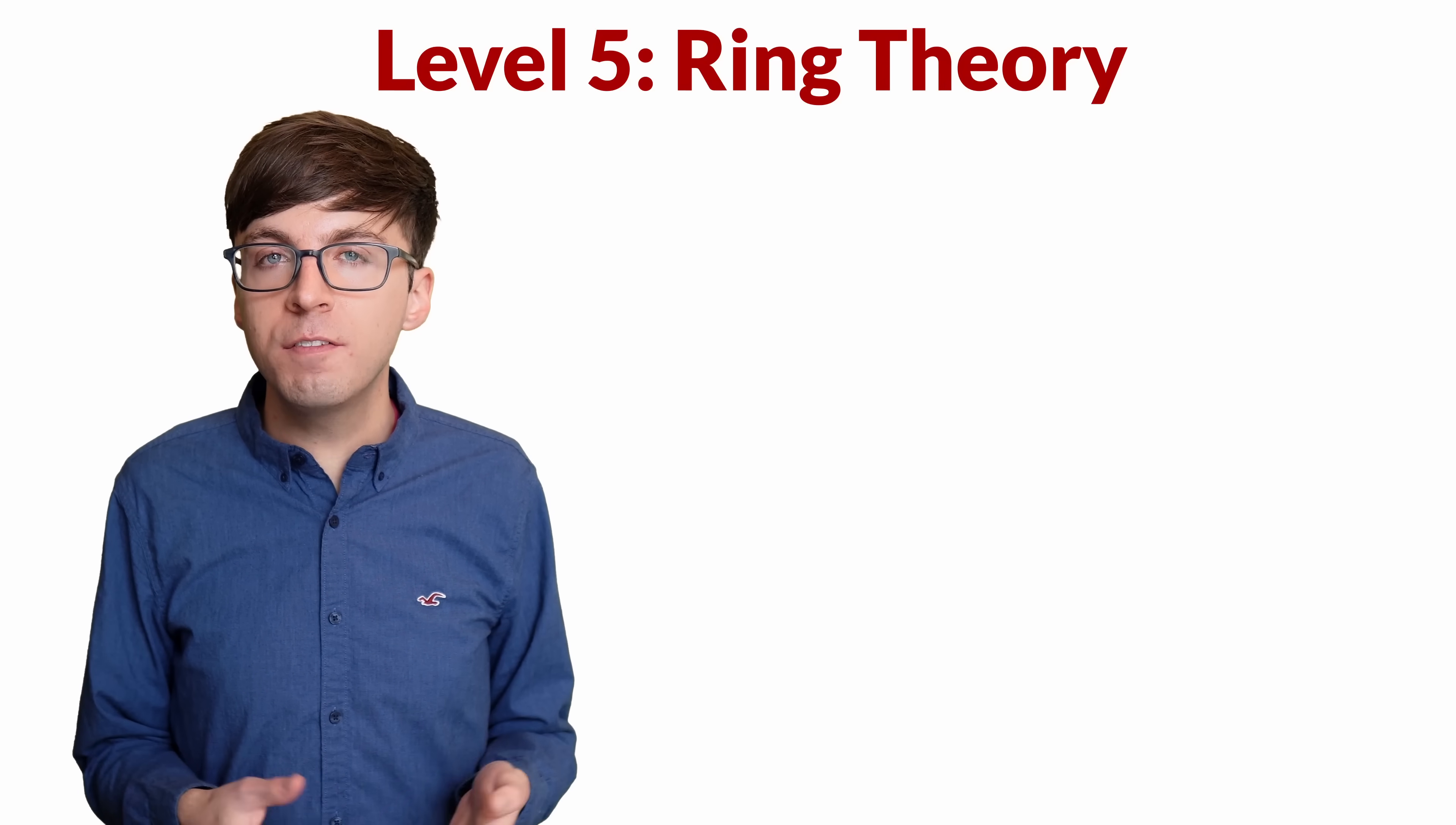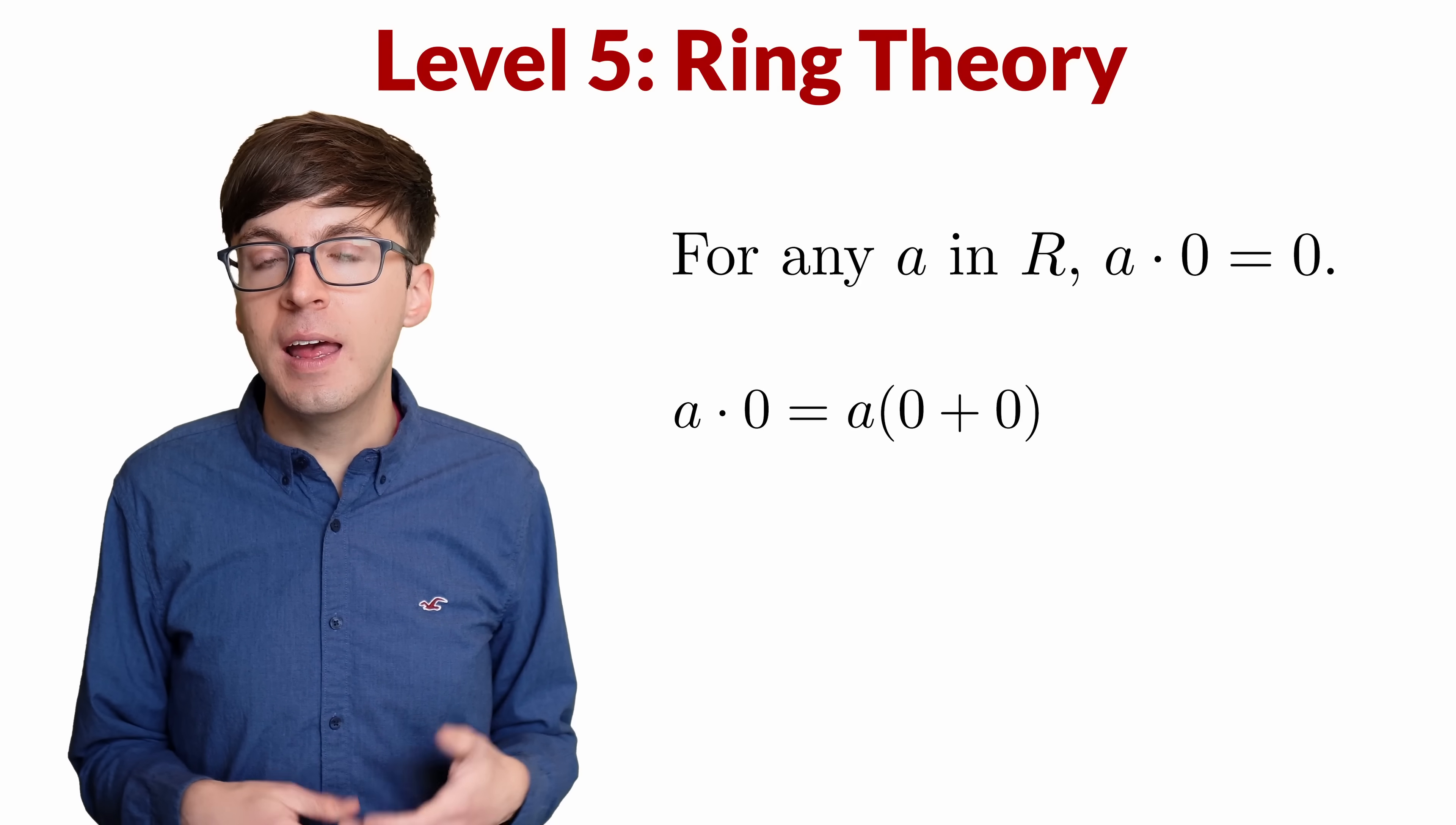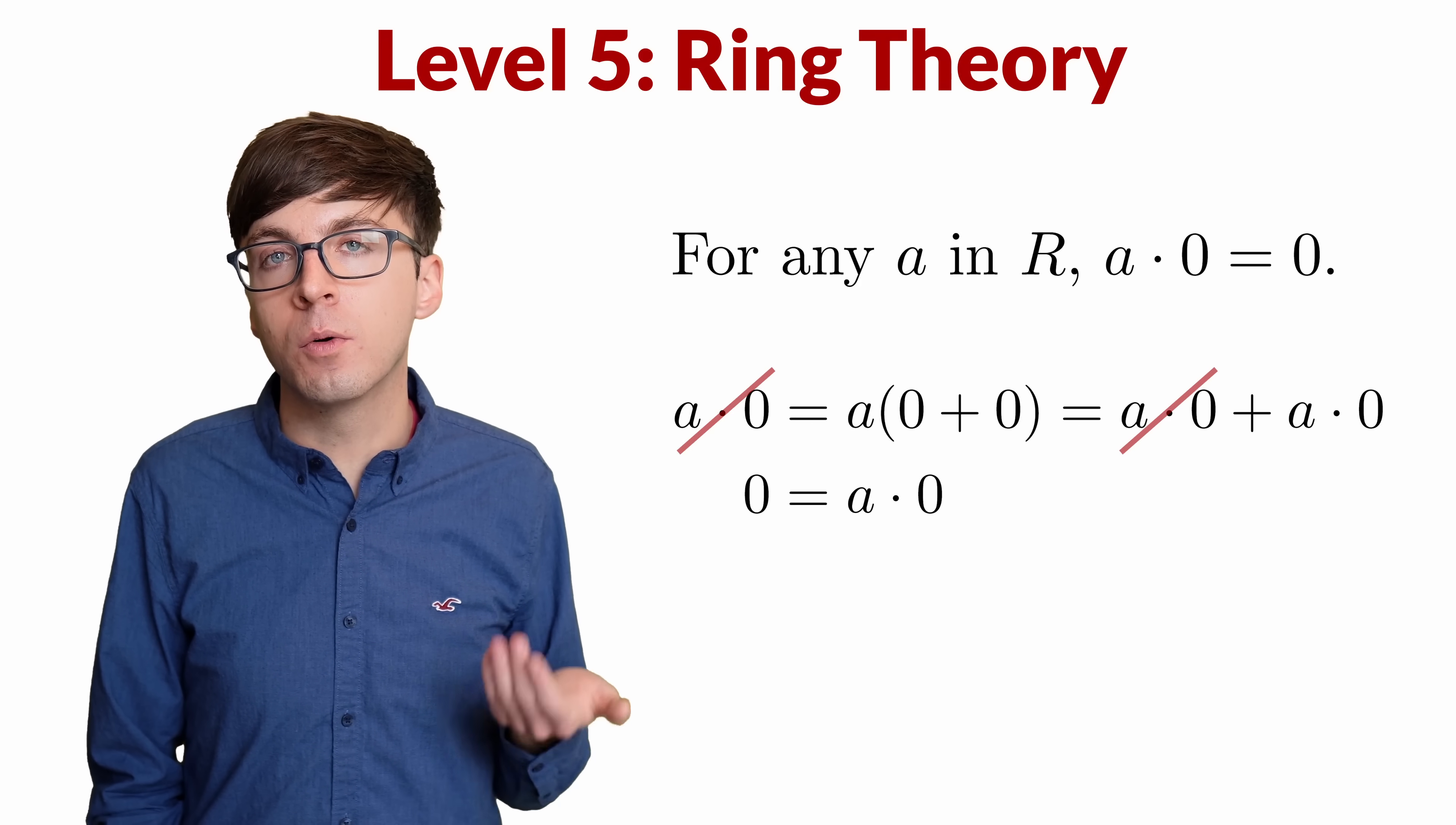There is one final fact we need, which is that a times 0 equals 0 for any a in the ring. To prove this, we can write a times 0 equals a times (0 plus 0), and then use the distributive property to split that up as a times 0 plus a times 0. Now we subtract an a times 0 from both sides to get a times 0 equals 0. So multiplying by 0 always gives us 0 in the ring.